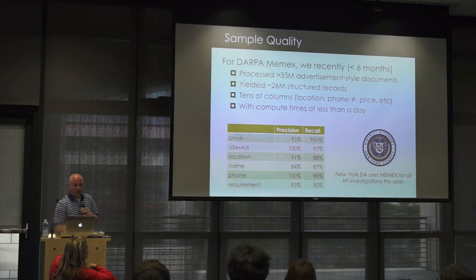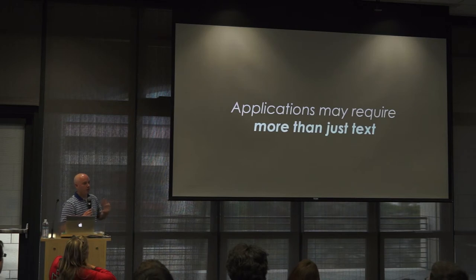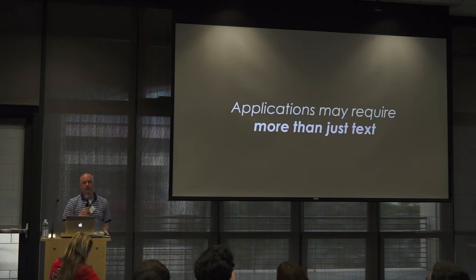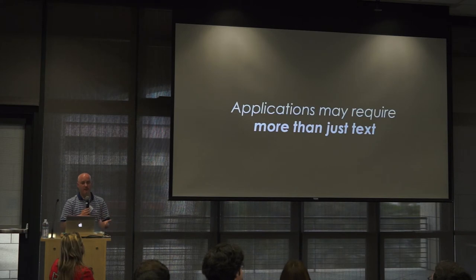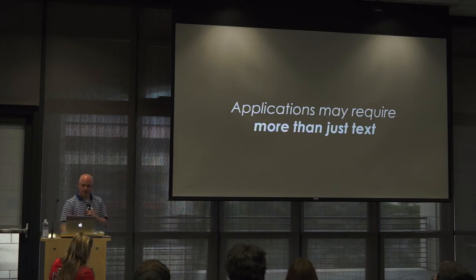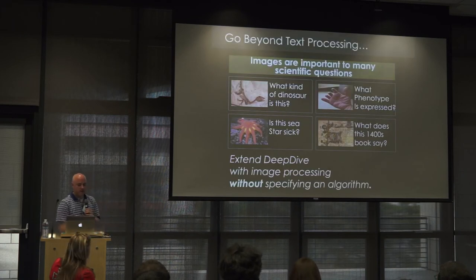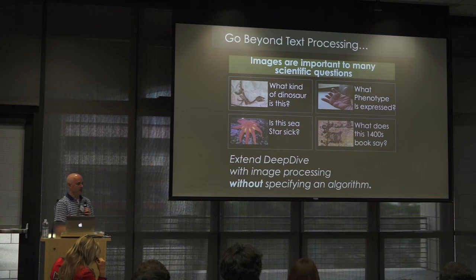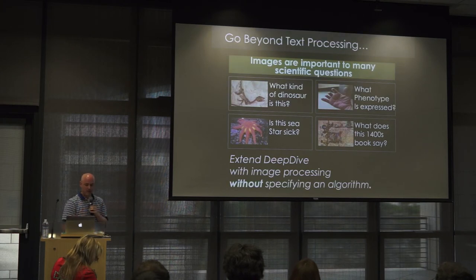Transitioning to more technical stuff and closer to the deep learning part: one thing we observed across this project and various enterprise projects was that there are these composite documents out there. Increasingly you have text and some amount of images — things like a company with insurance claim text and pictures of the insurance claim. So we wanted to extend DeepDive to have some amount of image processing without specifying an algorithm — still keeping this high-level vision where scientists just write down features of their particular application.